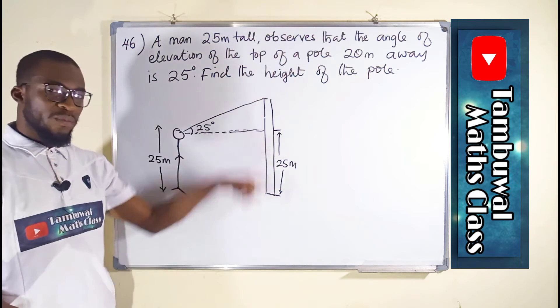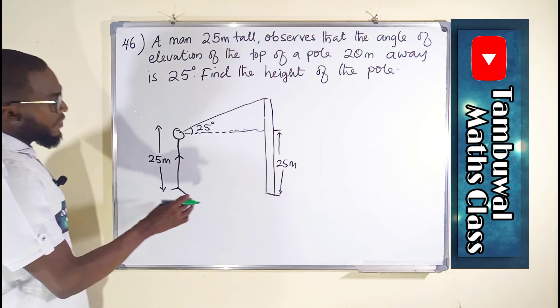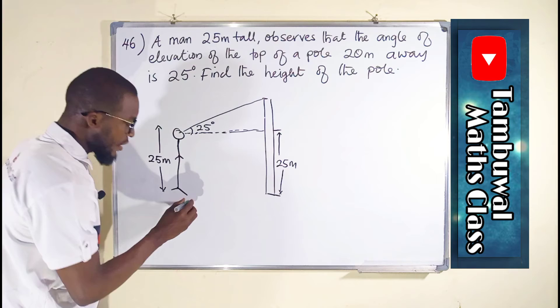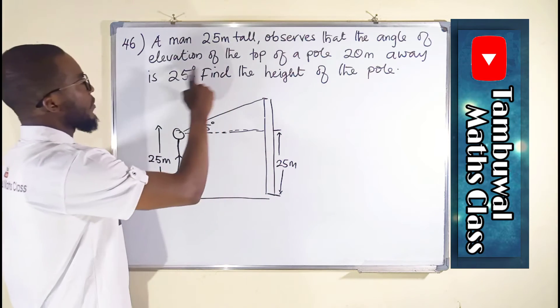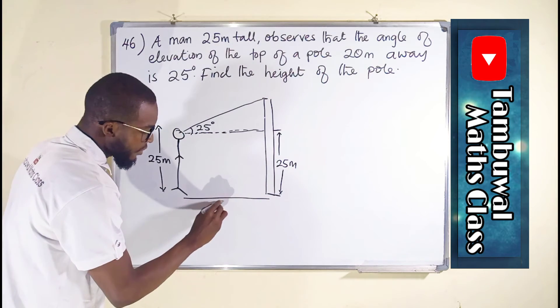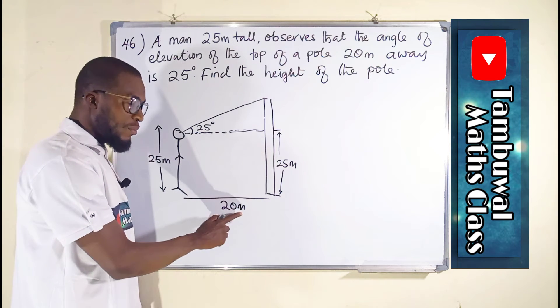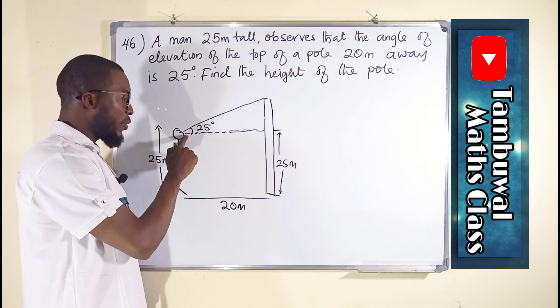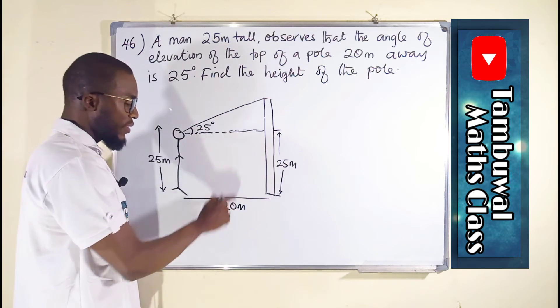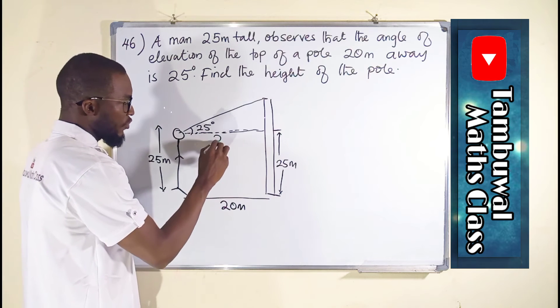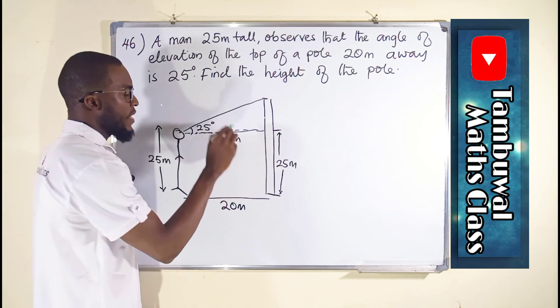Because we want to find the length of this pole. The question says the distance between the pole and the man is 20 meters away. If their distance apart is 20 meters, even the horizontal line must be 20 meters. Because the opposite sides of a rectangle are equal. So this is also 20 meters.